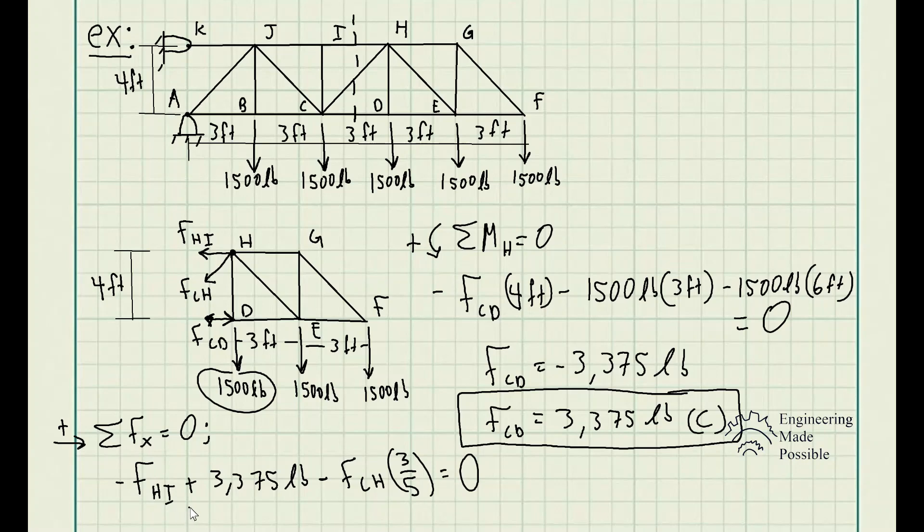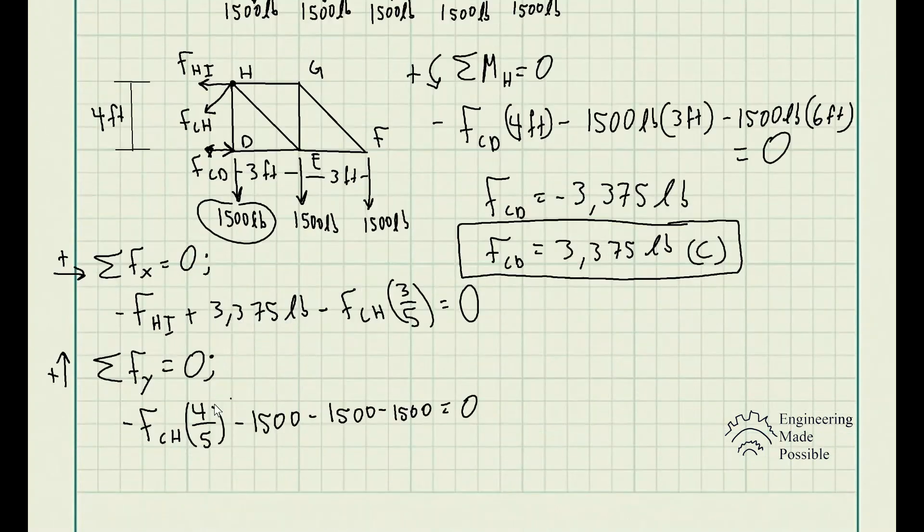But we also have the sum of forces along the y direction. So let's go ahead and see what that gives us. So we have negative F_CH and we're using sine theta, which is opposite over hypotenuse, 4 fifths, take away 1500, take away 15, and take away 1500.